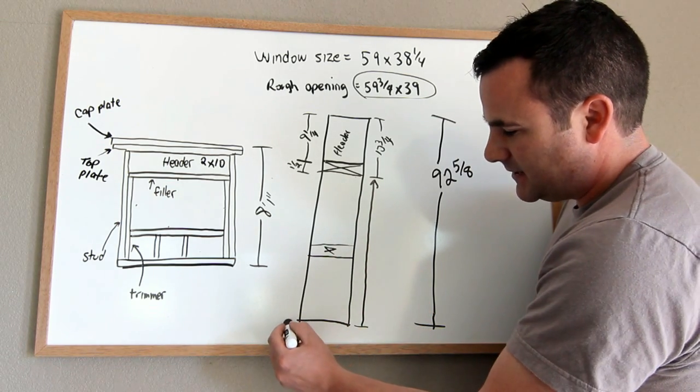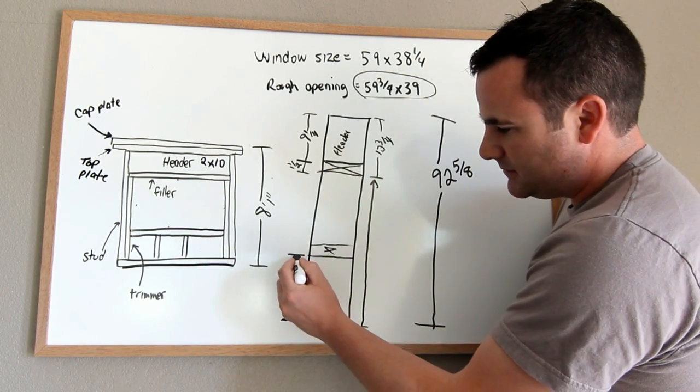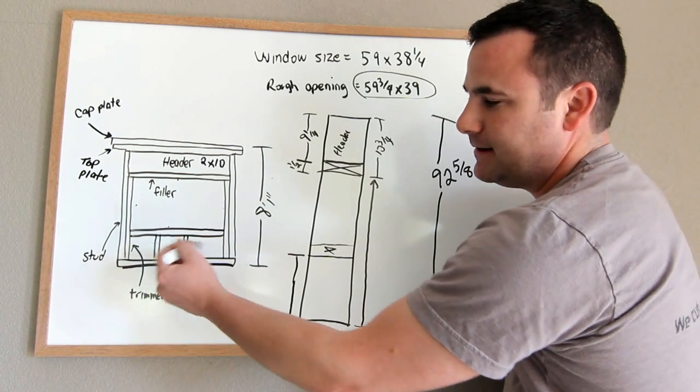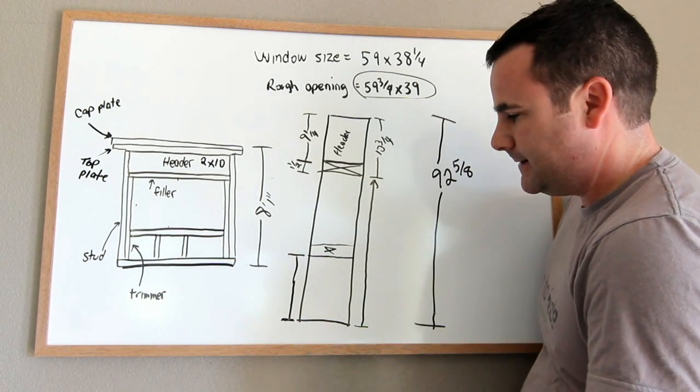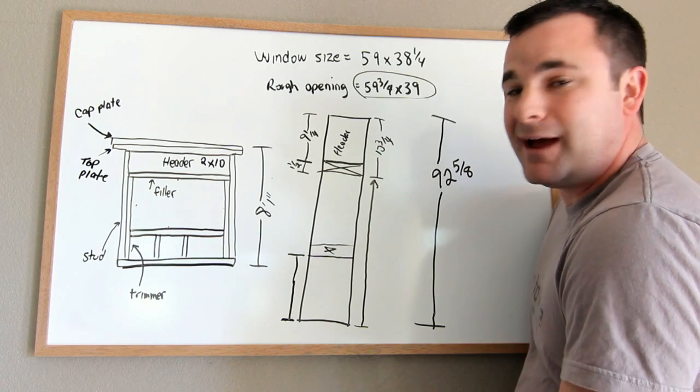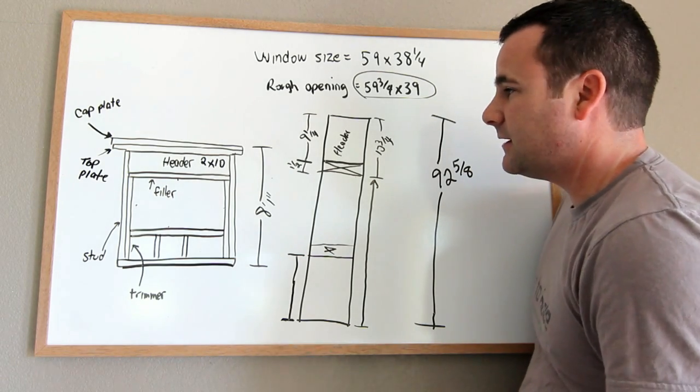And then once again, I measure from the bottom of my stud to the bottom side of my rough sill. And that's whatever the measurement is, and then you can cut all your cripples for that. Once you do that, you know where to nail everything, you know the lengths of everything. So it's just a good way to do it.